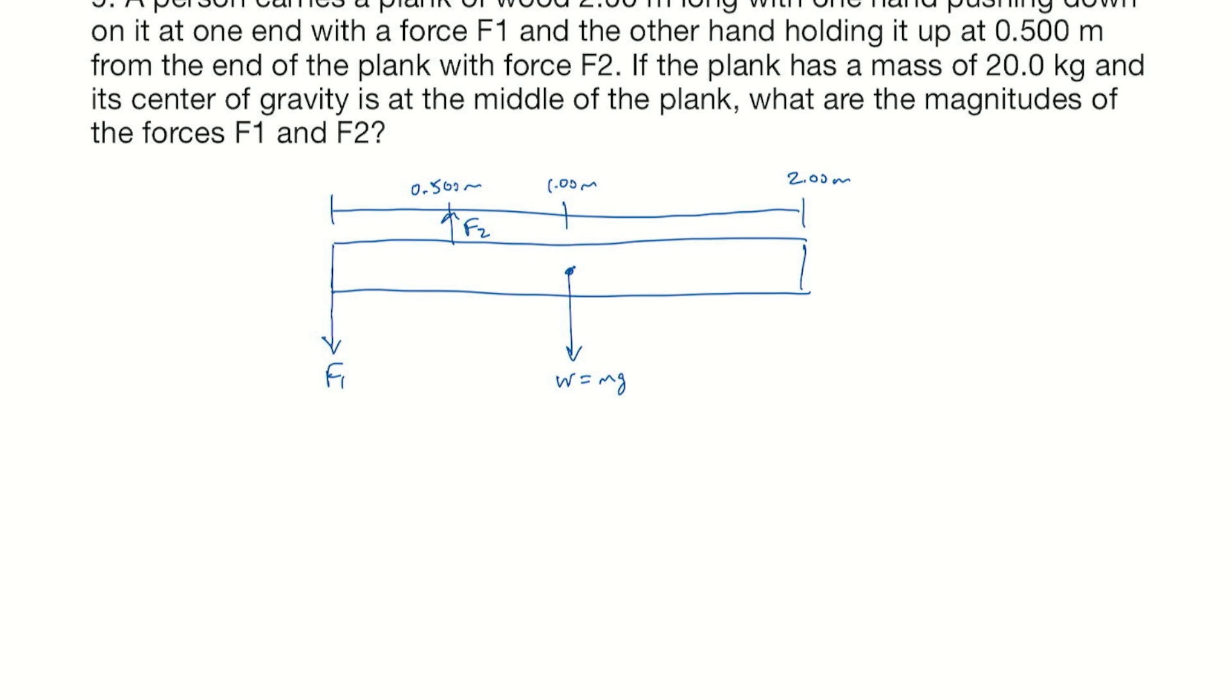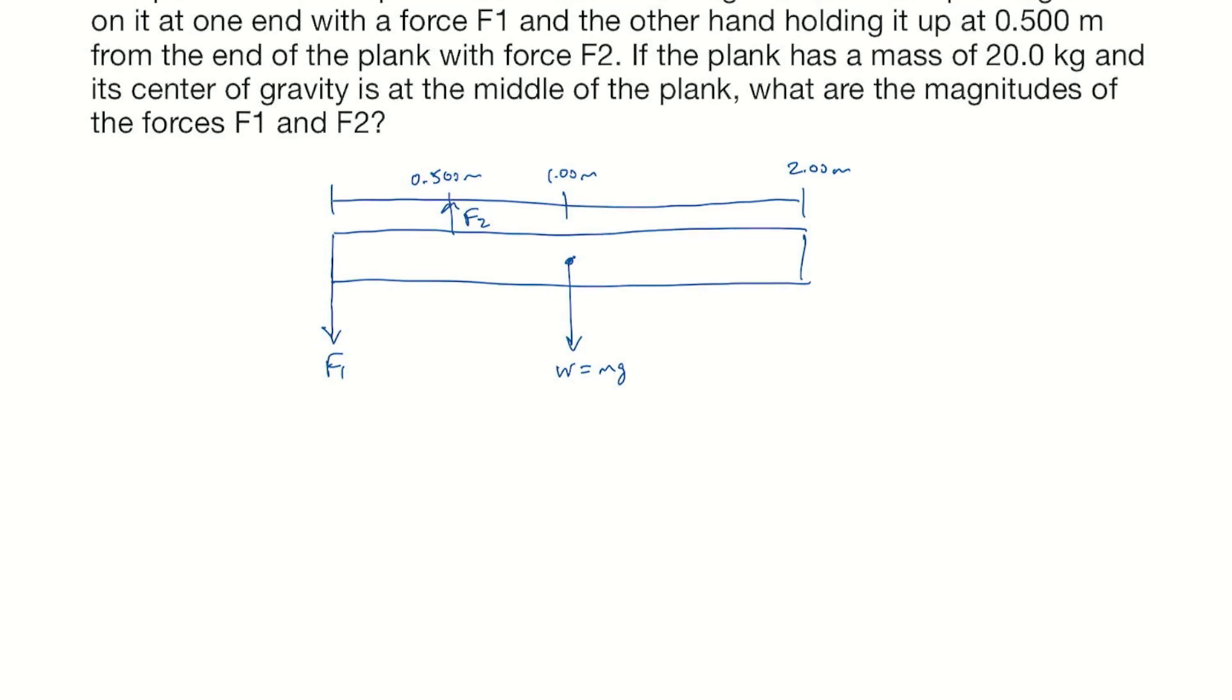We know the sum of the torques is 0. The person's holding it. The plank of wood isn't spinning around. And so we need to find F1 and F2. Let's make the center of gravity as the pivot.